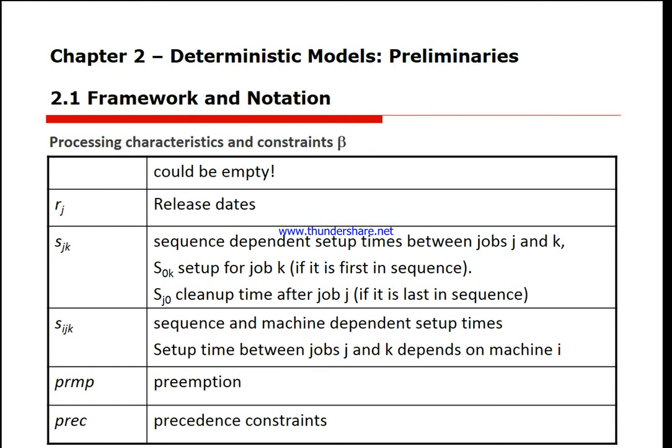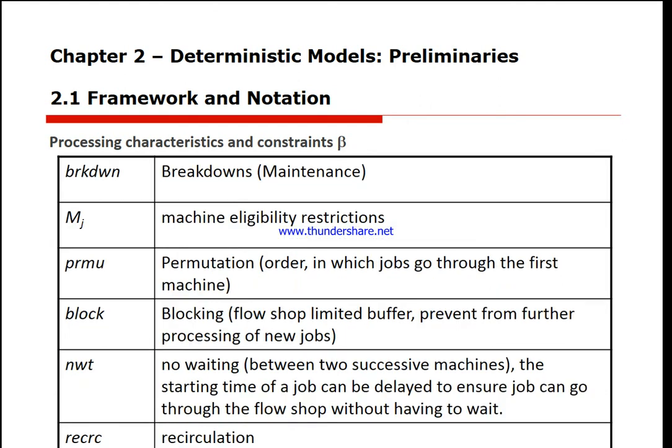Precedence constraints: one or more jobs have to be completed before another job is allowed on the machine. This is called a precedence constraint. We also have machine breakdown.